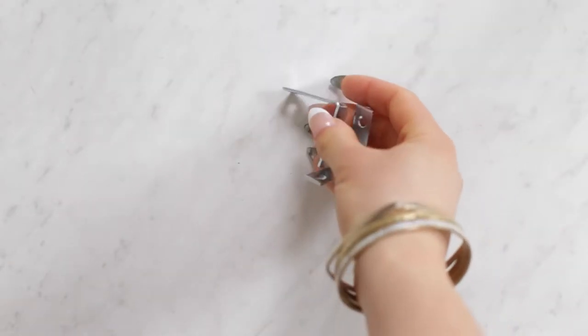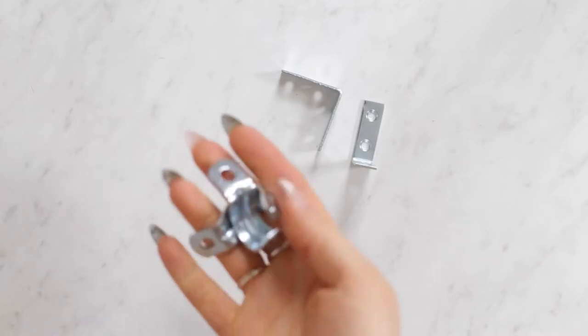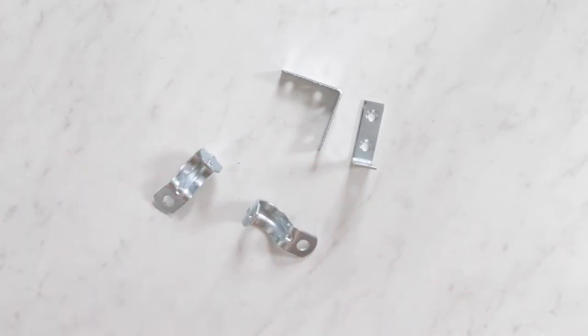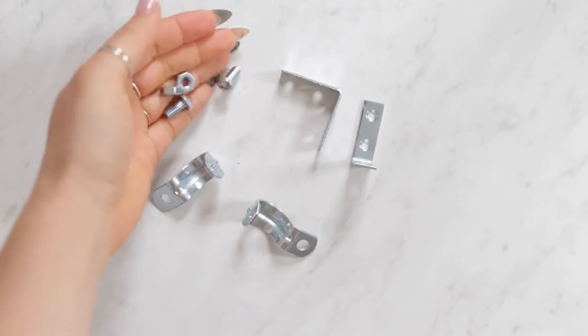Then I created the brackets for the wall using 1.5 inch corner braces, 1.5 inch one hole straps for conduit, and 1.5 inch machine screws with nuts.